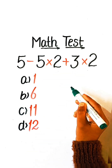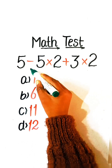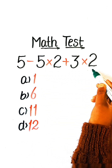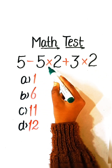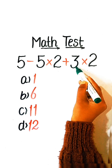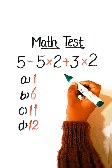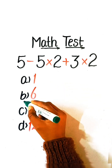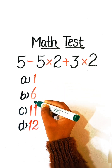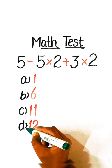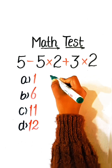Hello everyone, welcome back to my YouTube channel. In this video we will solve this math equation: 5 minus 5 multiply by 5 plus 3 multiply by 2 equals to what? Option A, Option B, Option C: 11, Option D: 12. So let's solve this.